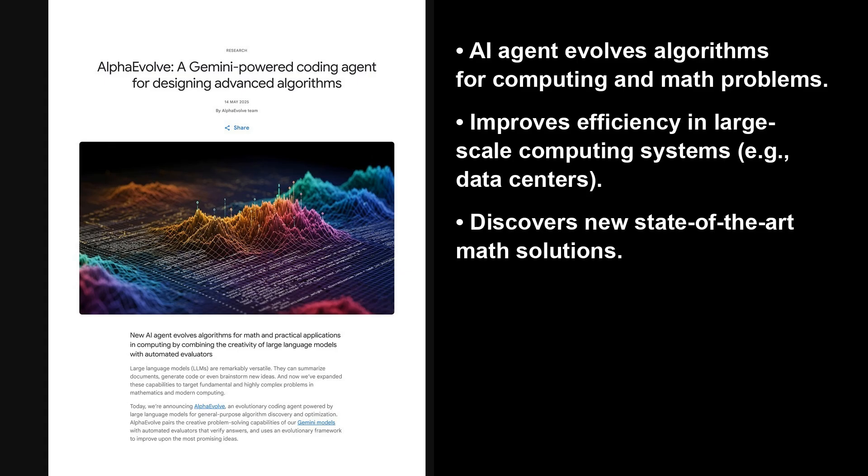It uses Gemini LLMs with automated evaluators to discover complex algorithms. Results include 0.7% compute recovery in data centers using a new heuristic, optimized circuits for tensor processing units, or TPUs, Google's custom AI chips, and a 23% speed-up for a core Gemini training kernel.